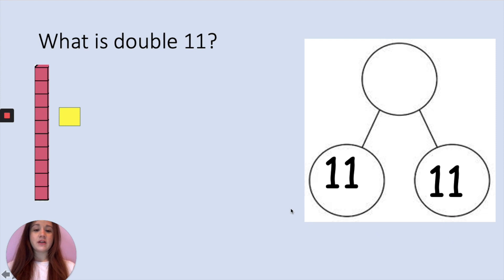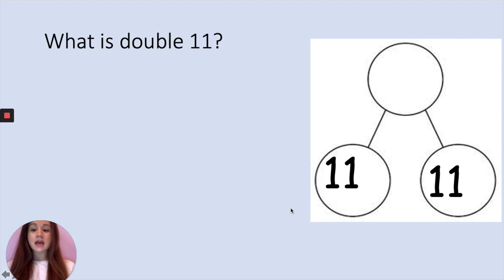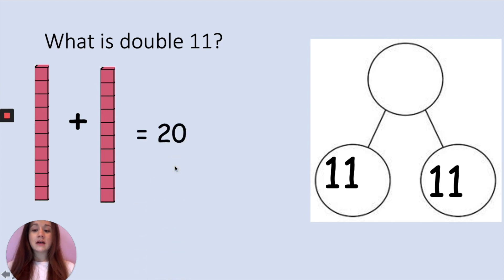So what we are going to do is take our tens and add them together first. 10 add 10 is 20 and we know that because when we are counting in tens it goes 10, 20.